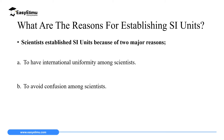Before 1960 there was confusion among scientists and they were using different types of units to make measurements. So they decided to create the SI units. The main reasons: first, to have international uniformity so that if any scientist does research anywhere in the world it can be understood all over the world among scientists. The second reason was to avoid confusion like in the past.